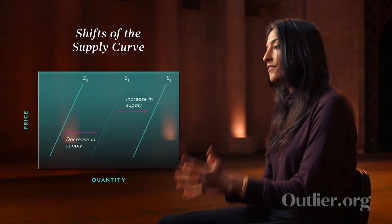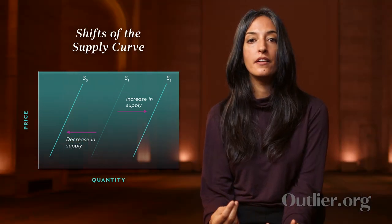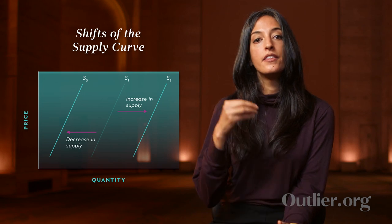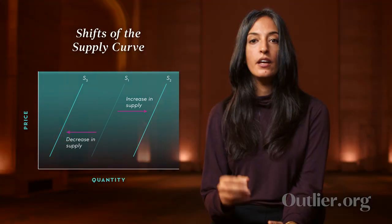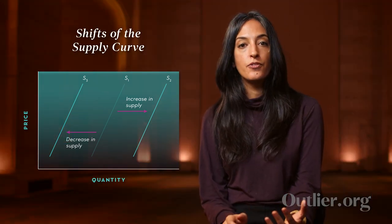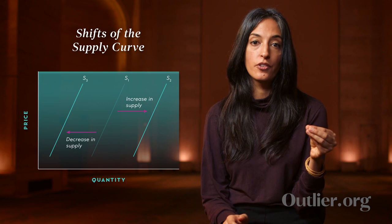So we're going to distinguish between the notion of a change in the quantity supplied — that is, a movement along a static supply curve — and a change of the supply curve itself, that is a movement of the supply curve either to the left or to the right. An increase in supply is depicted as a rightward shift of the supply curve, meaning that at any given price, sellers are now willing to supply more units than before. A decrease in supply, or a leftward shift, means that at any given price, sellers are willing to supply fewer units.